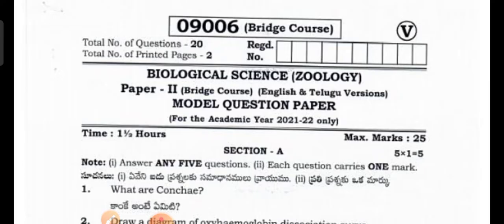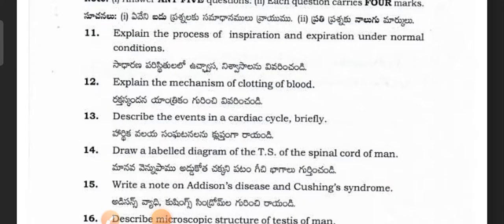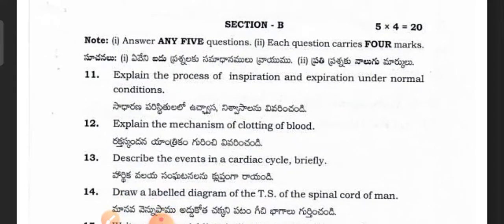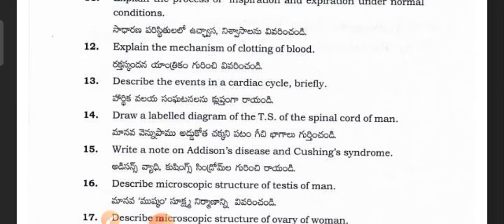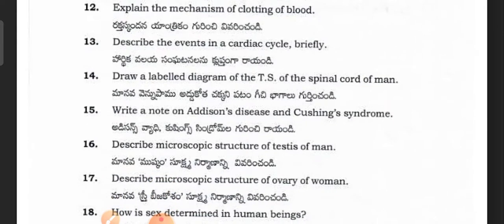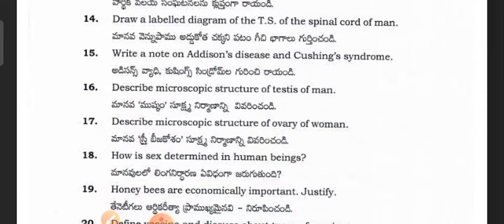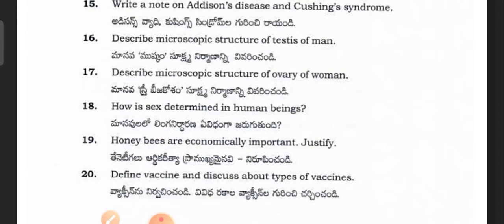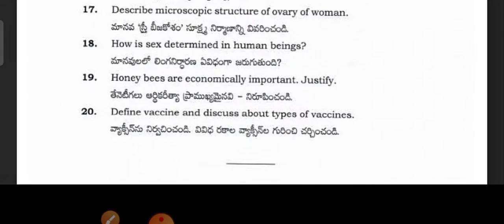Section B, four-mark questions: Explain the process of inspiration and expiration under normal conditions. Explain the mechanism of clotting of blood. Describe the events in the cardiac cycle briefly. Draw a labeled diagram of the cross-section of the spinal cord. Write a note on Addison's disease and Cushing's syndrome. Describe the microscopic structure of the testis of man. Describe the microscopic structure of the ovary. How is sex determined in human beings? Honeybees are of economic importance — justify. Define and discuss the types of vaccines.